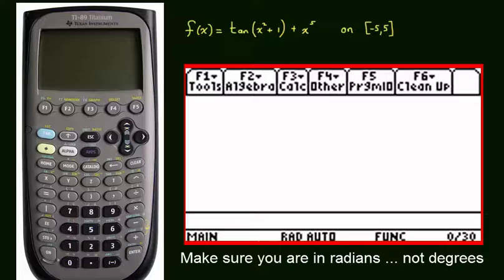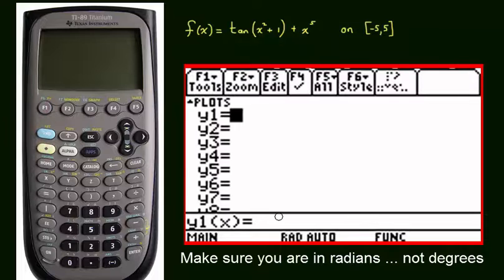To get to our Y equals screen, we want to press the diamond together with F to achieve the Y1 that you see above the F button. Your screen should look something like this.